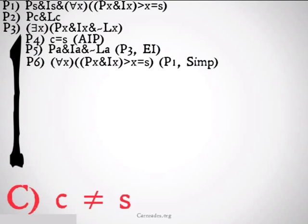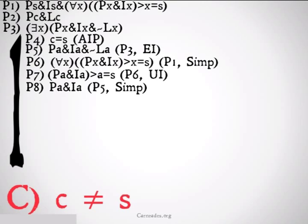We get A as a P and A as an I, and it's not the case that A is an L, premise 3 existential instantiation. Premise 6, for all X, X as a P and X as an I implies X is identical to S. That's just premise 1, simplification. Premise 7, A as a P and A as an I implies A as an S. That's premise 6, universal instantiation. We're allowed to instantiate into that A because it's universal instantiation. We can simplify premise 5 down to A as a P and A as an I.